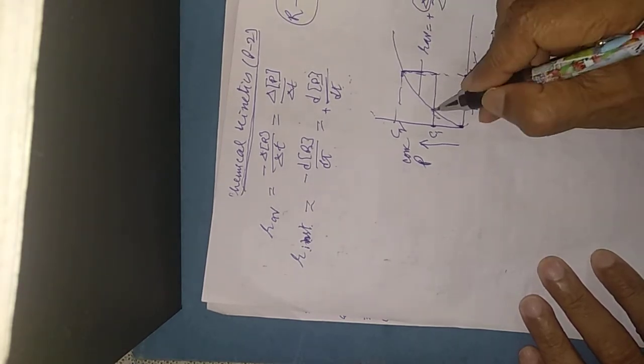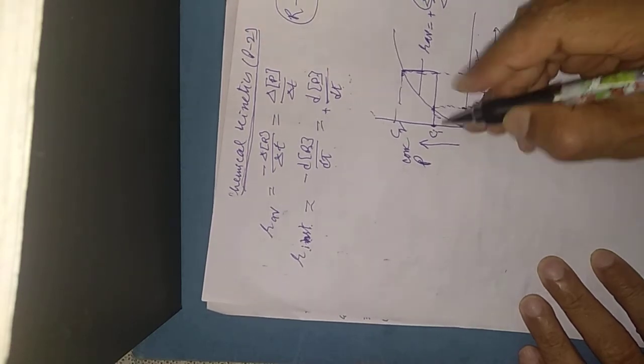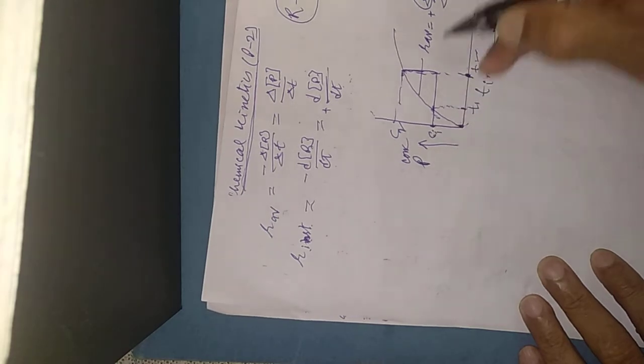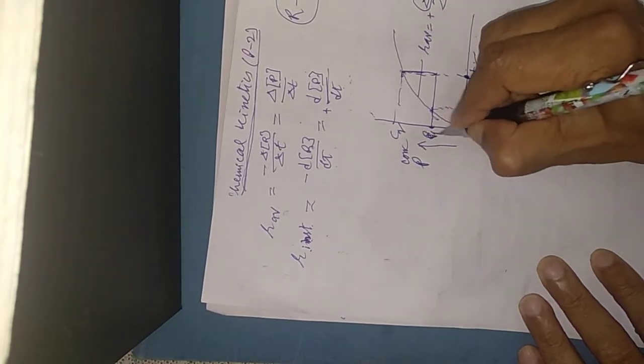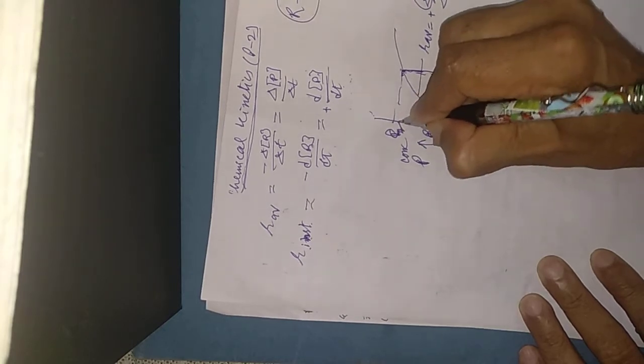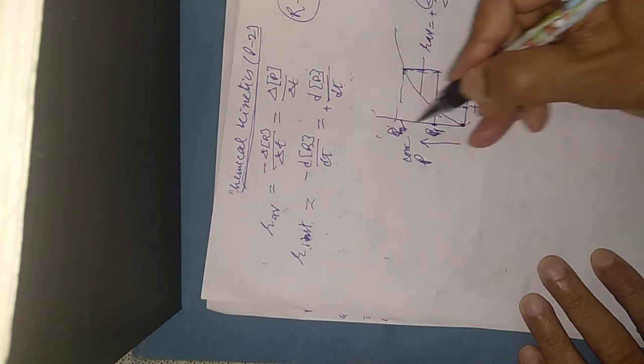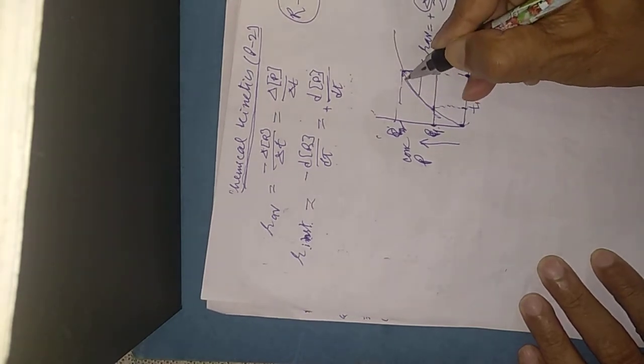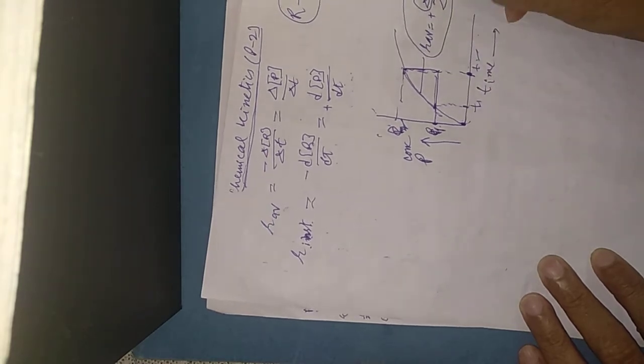When time is increased, concentration is increased. We have concentration P1 and P2. What is delta P? P2 minus P1. This is delta P from concentration. Delta T comes from time. This is how we find R average.